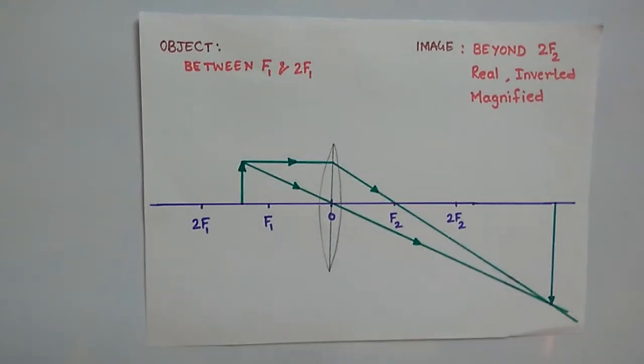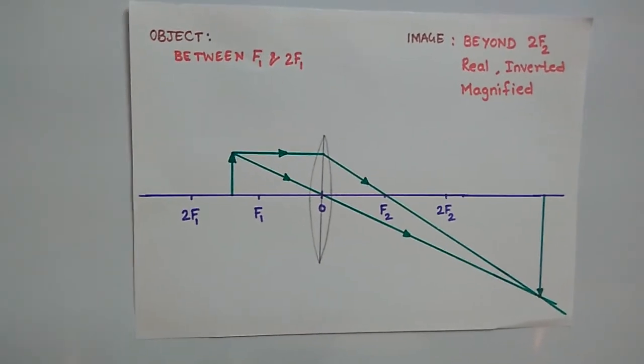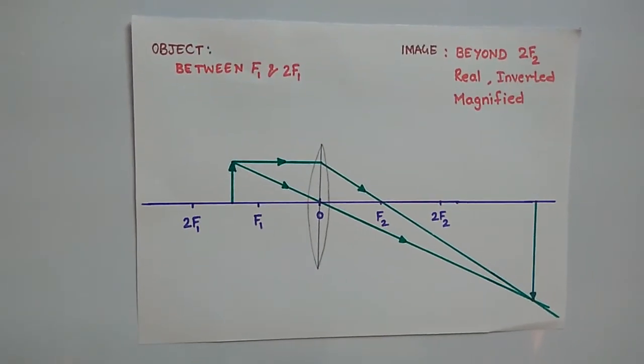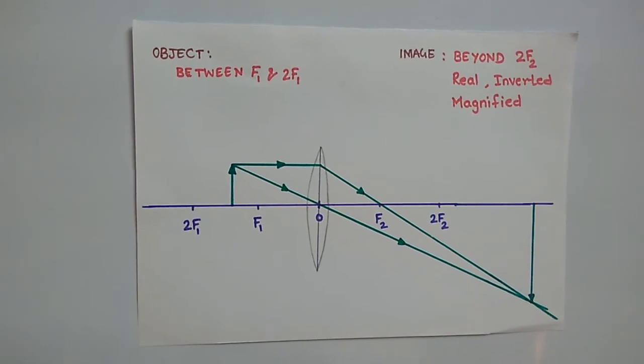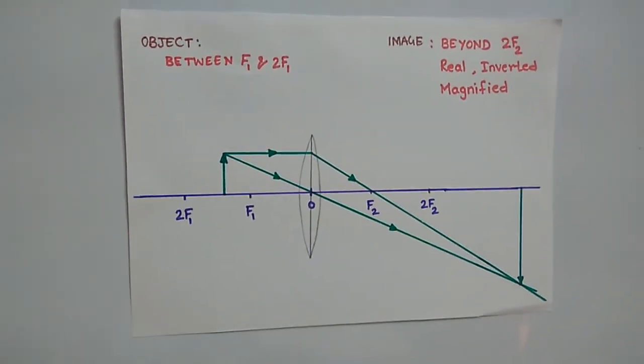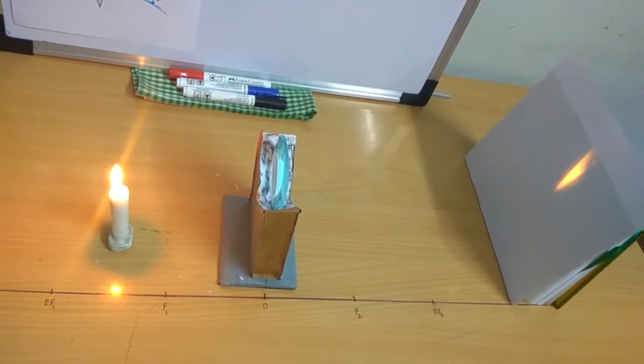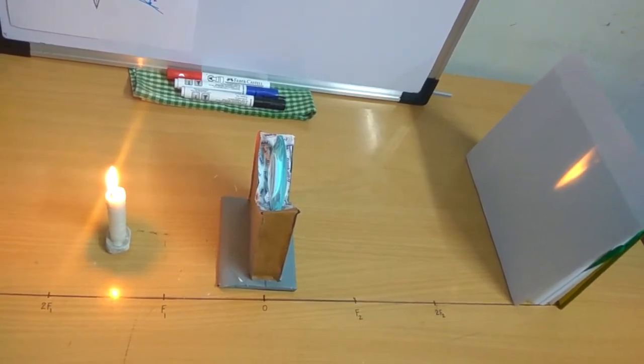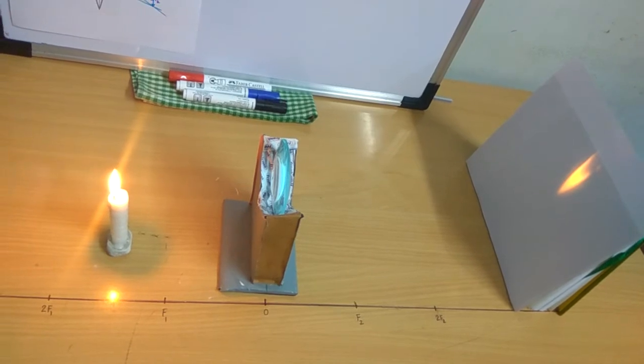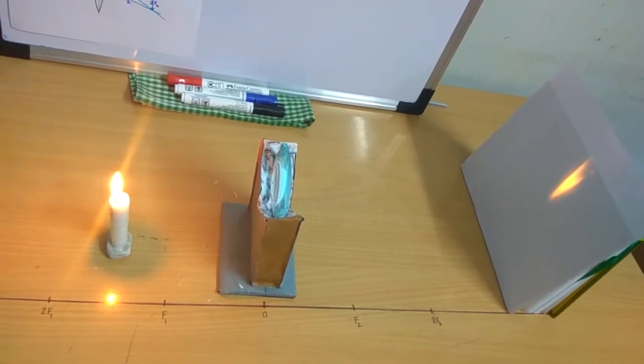As you all very well know, when the object is between f1 and 2f1, the image is formed beyond 2f2. It is a real, inverted, and magnified image. So this is the case when the object is placed between f1 and 2f1.